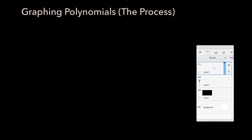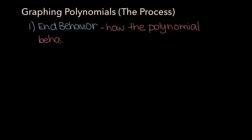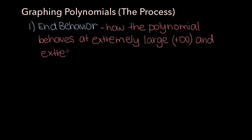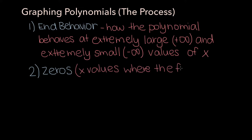Now that we know what a polynomial is, let's dive into the actual process of graphing one. I've broken this process up into two different parts. The first step is to identify the end behavior of the polynomial — how the polynomial behaves at extremely large and extremely small values of x. The second step involves finding the zeros, the x values where the function is equal to zero, and determining the multiplicity of each zero.